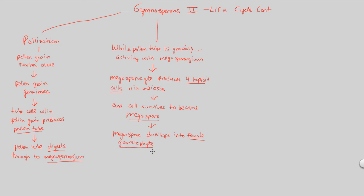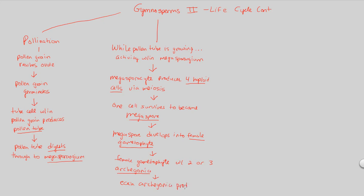The female gametophyte, to make things even more complex, will contain 2 or 3 archegonia. Whenever you see archegonia — the female version, not anther — this is specifically the female part of the female gametophyte. These archegonia will each produce an egg, and that's exactly what we needed to get to. Each archegonia produces an egg.